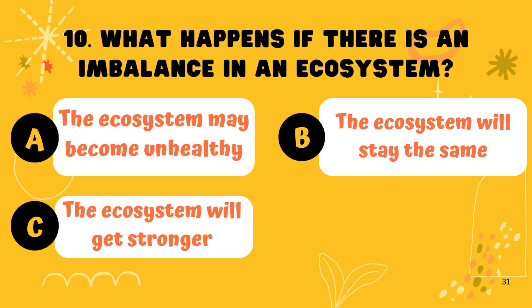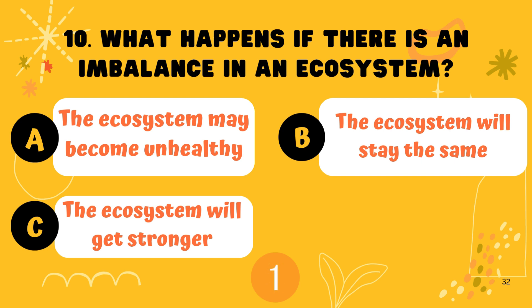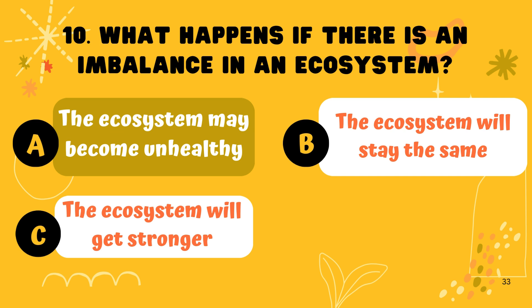Question 10. What happens if there is an imbalance in an ecosystem? Option A: The ecosystem may become unhealthy.